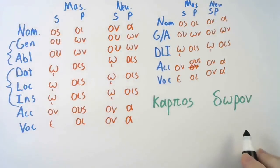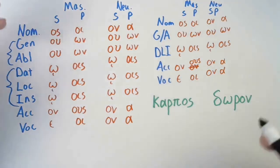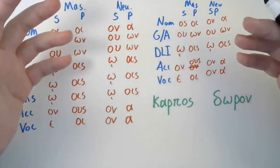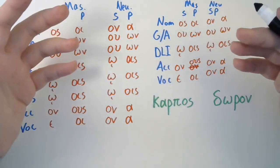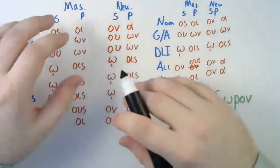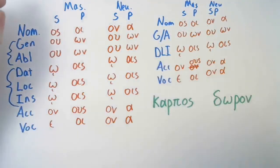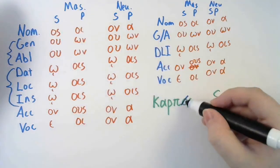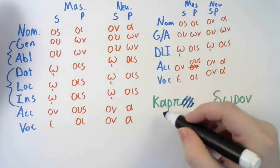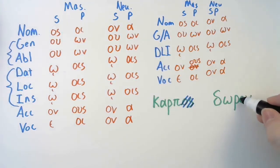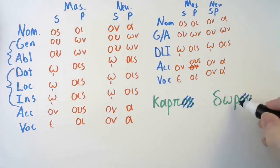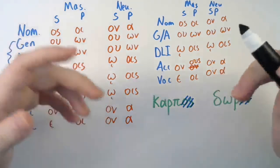So, karpos and doron. Now, we need to find the stem because you add endings to a stem, just like in verbs. So, how did we get a stem from our verb? We took its lexical form and we dropped the ending we knew. So, we take karpos and we drop the ending, which is os. Karp is our stem. And for doron, dor is our stem. So, now we can take and we can decline it.